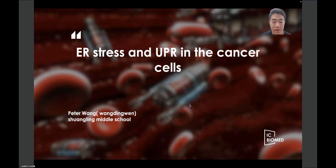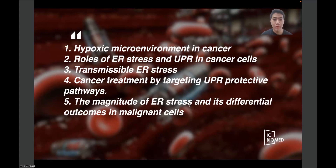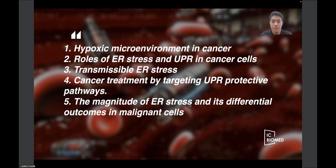Hello, my name is Peter, and today I'm going to talk about ER stress and UPR in the cancer cells. My speech has been divided into five parts: the first one is hypoxic microenvironment in cancer; the second is roles of ER stress and UPR in cancer cells; the third is transmissible ER stress; the fourth is cancer treatment by targeting UPR protective pathways; and the fifth is magnitude of ER stress and the differential outcomes in malignant cells.